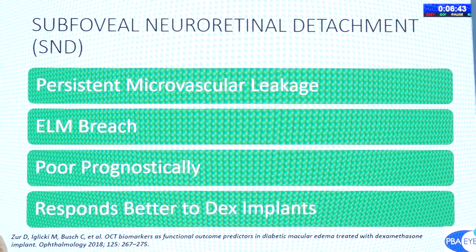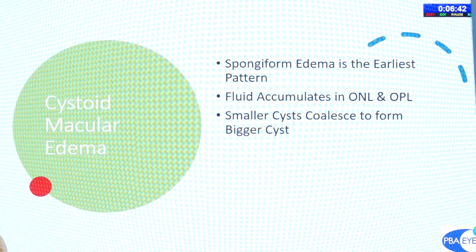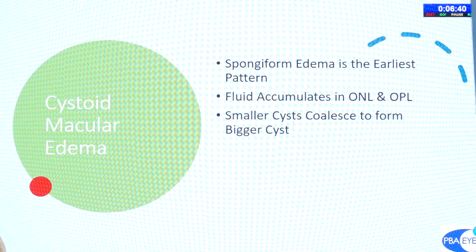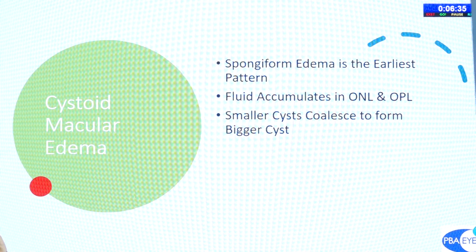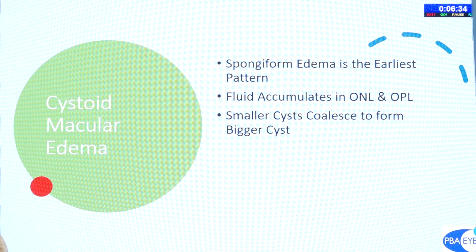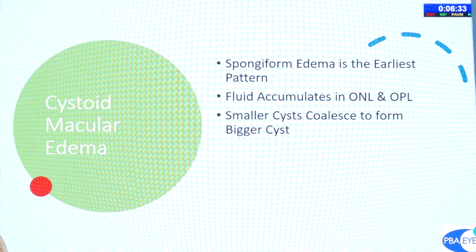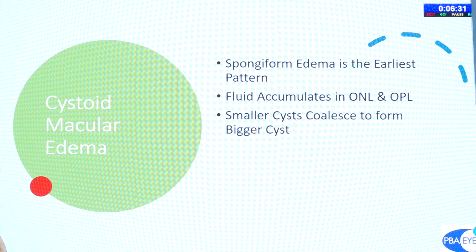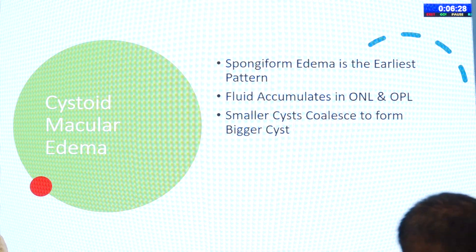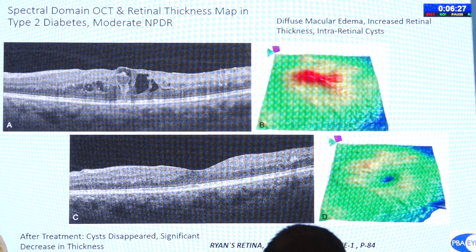Cystoid macular edema and spongiform edema are the earliest patterns of edema. Fluid accumulates in the ONL and OPL; smaller cysts coalesce to form bigger cysts.